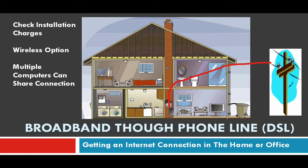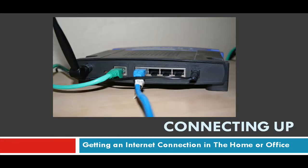Broadband through a phone line also allows you to have multiple computers sharing the same connection, which is ideal in an office environment and useful at home if you've got more than one computer. The operator will send you out a broadband router. The back of it has a number of connections: you need power, a blue cable that connects to your computer — on this model there are four computer connections — and a green wire on the left which is the phone line connection. That's why this unit must be placed close to where the phone line is.